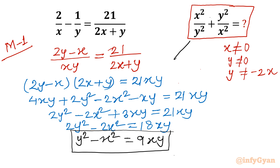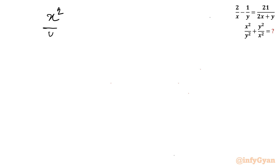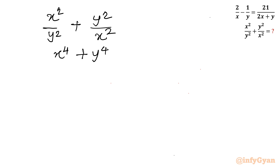Now I will take up the required expression: x²/y² plus y²/x². Let us simplify it by taking LCM, which gives us (x⁴ plus y⁴) divided by (x²y²). Using algebraic identities, we can write x⁴ plus y⁴ as (x²+y²)².